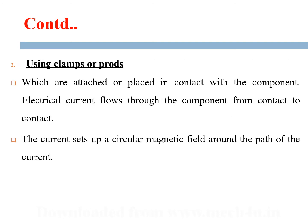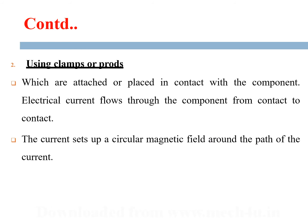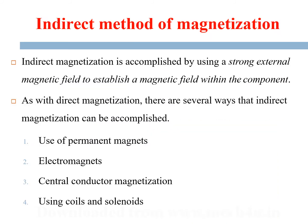The second direct magnetization method is using clamps or prods. These are attached or placed in contact with the component, and electrical current flows through the component from contact to contact, setting up a circular magnetic field around the path of the current. As shown in the figure, the two clamps are connected to either an AC or DC source. Due to residual magnetism after the field is removed, we can detect the presence of cracks. Both AC and DC current can be used for this method.